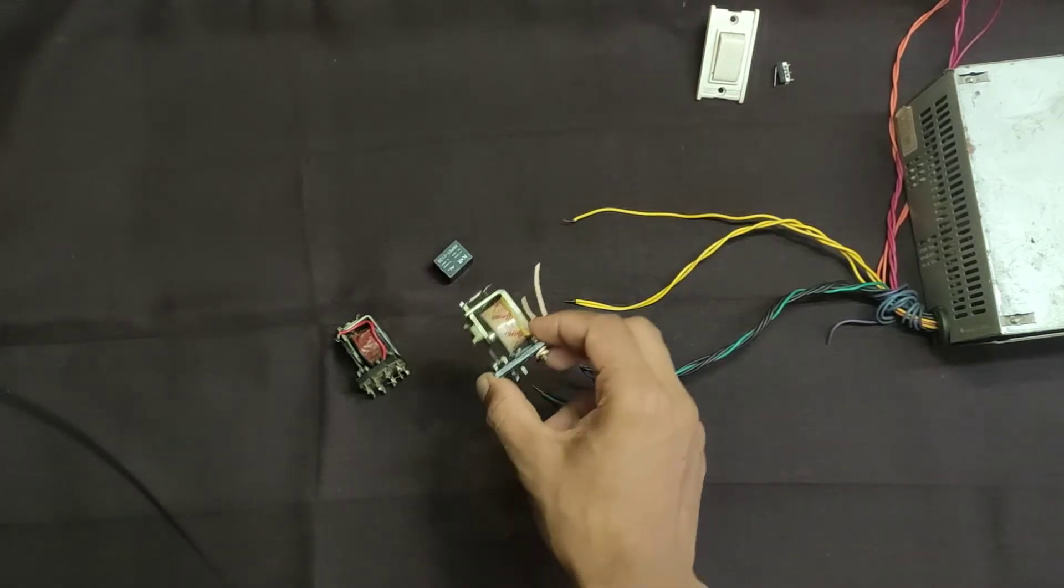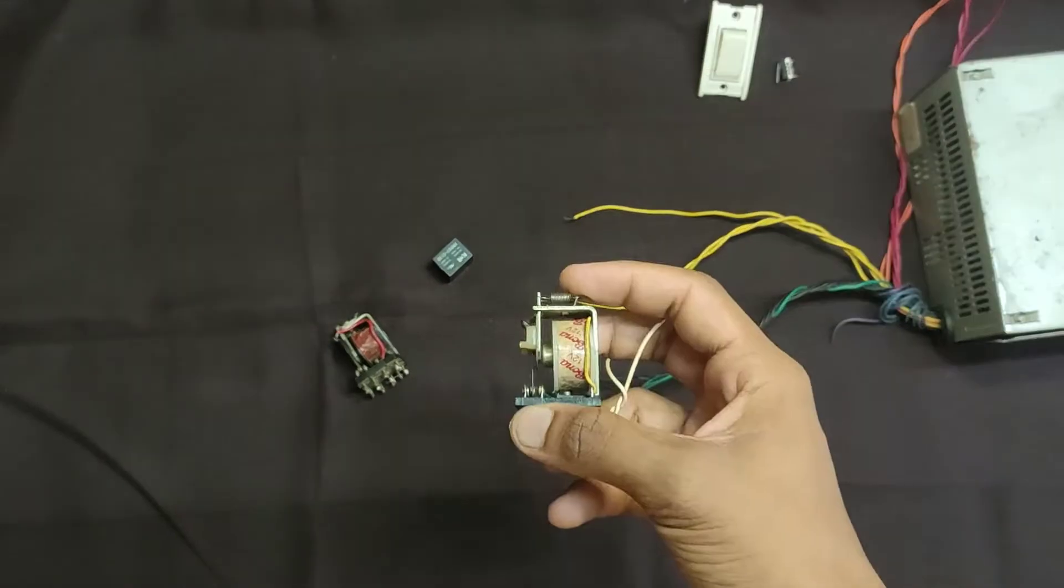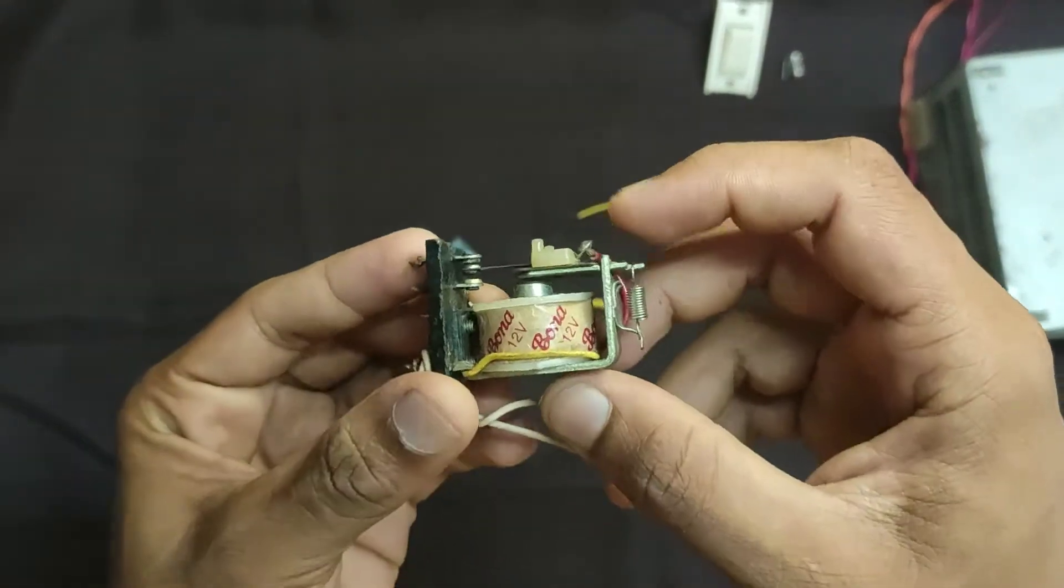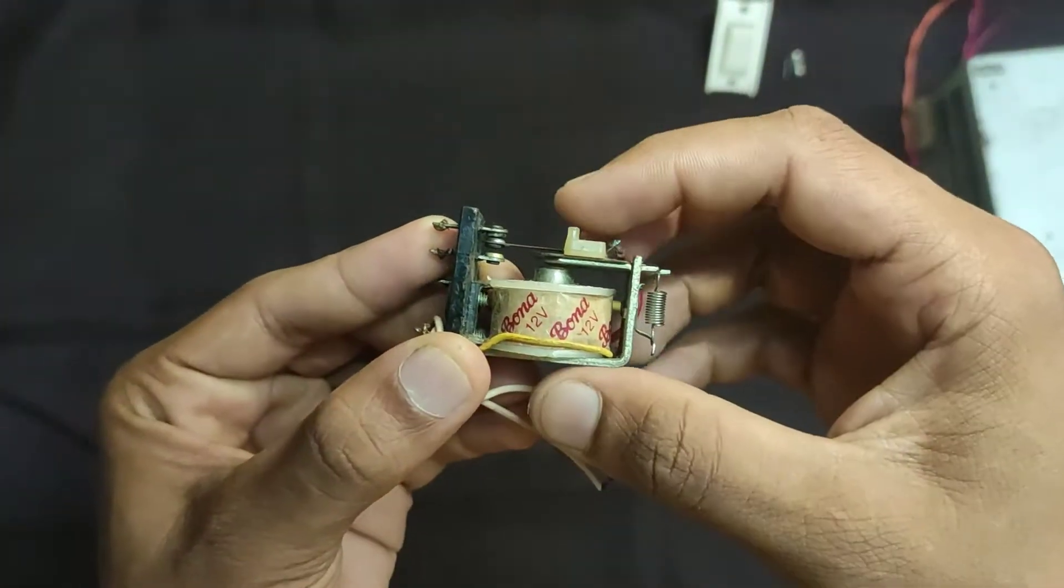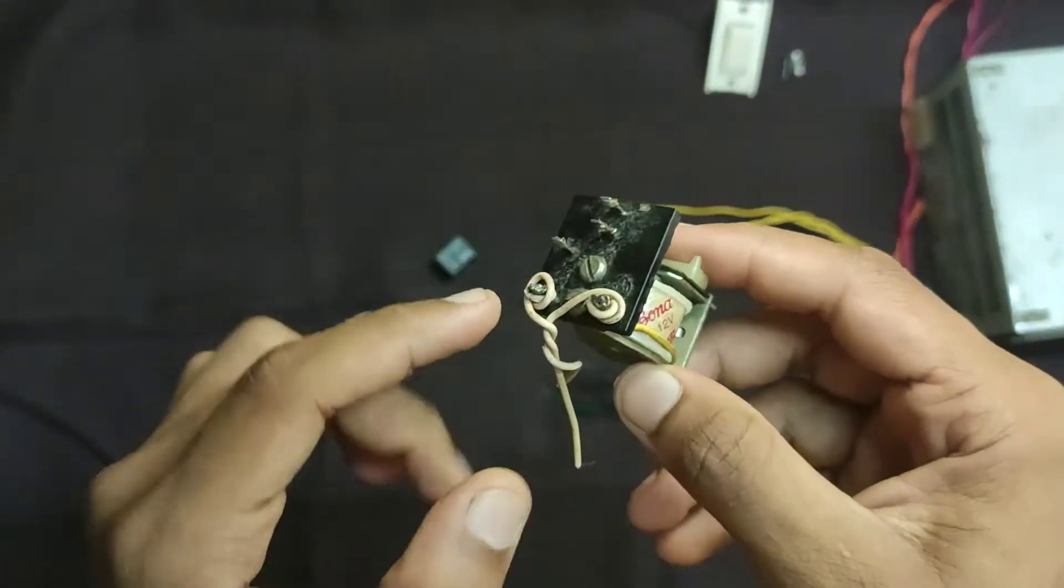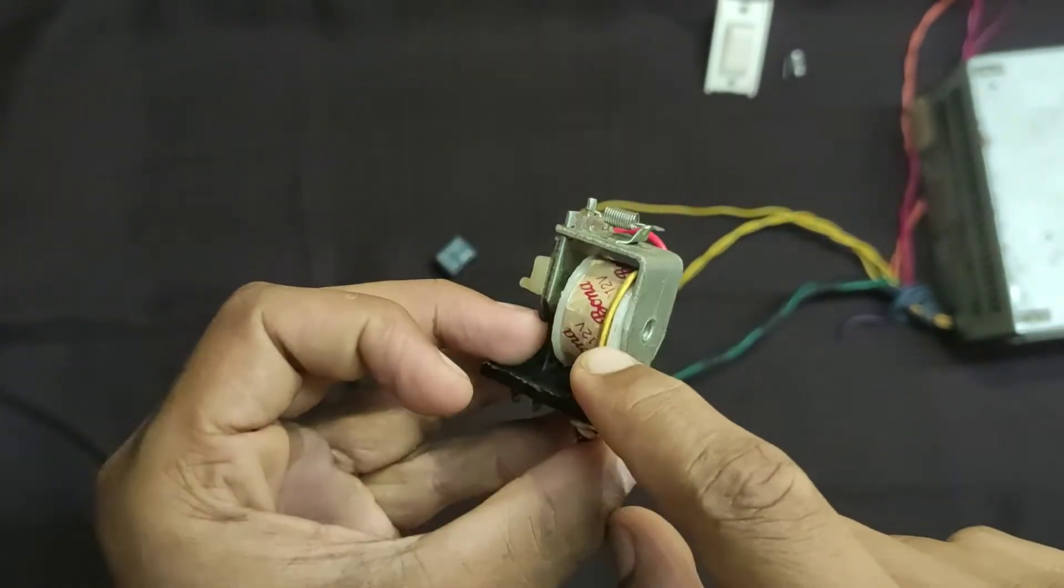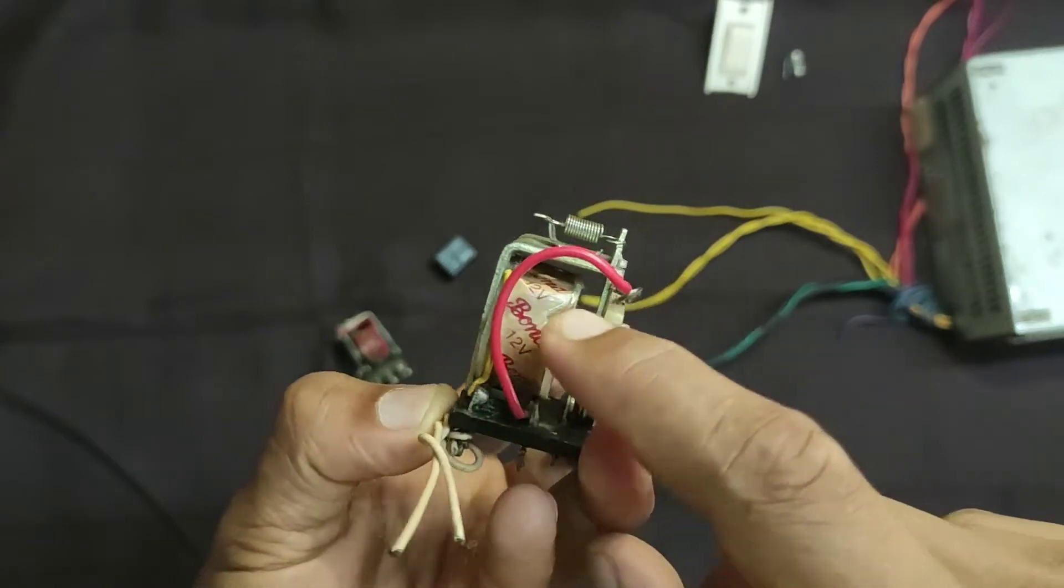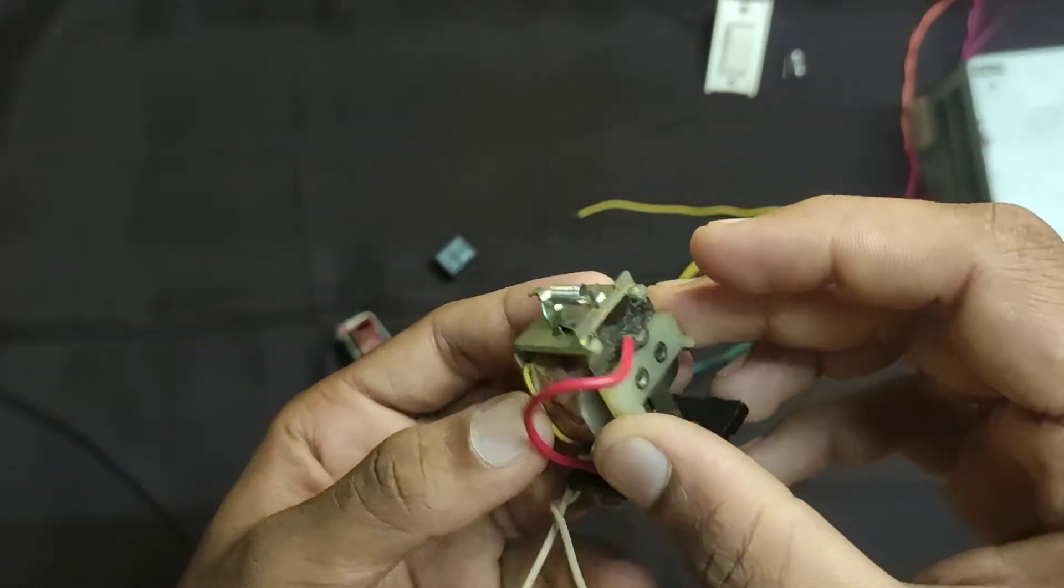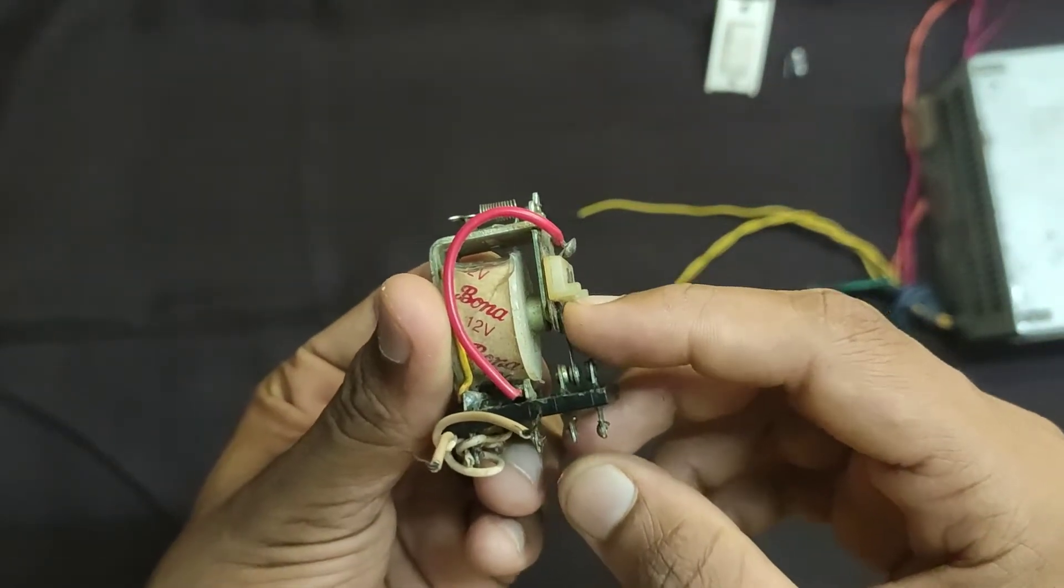Relay consists of an electromagnet and a movable iron contact which is attached to the spring. When we apply supply to the terminals of electromagnet it produces magnetic field, and the magnetic field will pull the iron contact against the spring. And when we off the supply or cut the supply to the coil, the iron contact will go back to its original position due to the spring action.